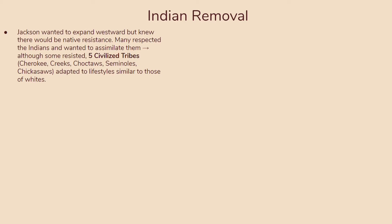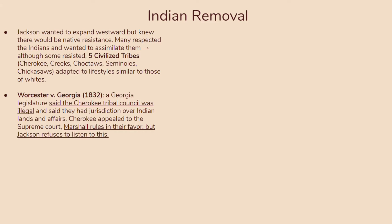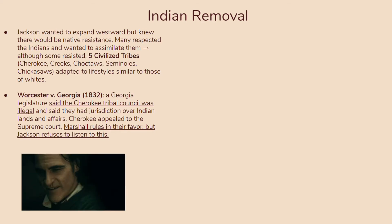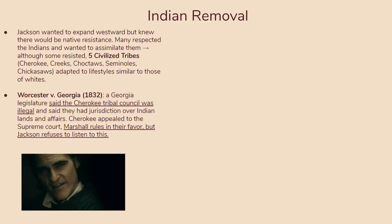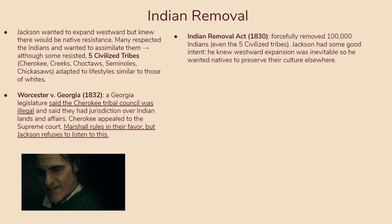When Jackson pursued Indian removal, he met resistance in the Worcester v. Georgia case in 1832. The Georgia legislature said the Cherokee tribal council was illegal and that it had jurisdiction over Indian lands. The Cherokee appealed to the Supreme Court and Chief Justice John Marshall ruled in their favor, but Jackson refused to listen. He passed the Indian Removal Act in 1830, which forcefully removed 100,000 Indians — even the Five Civilized Tribes, especially the Five Civilized Tribes — which really felt like a stab in the back to those who had done everything to assimilate.